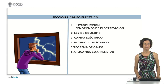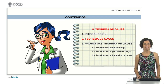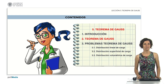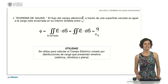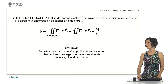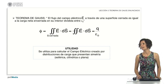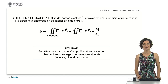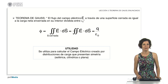Hello, we are in lesson 5 corresponding to Gauss's law. After having seen in the introduction the concept of flux, in today's lesson we are going to state Gauss's law, which tells us that the electric field flux through a closed surface is equal to the net charge enclosed inside it divided by the electric permittivity in vacuum, epsilon sub zero.